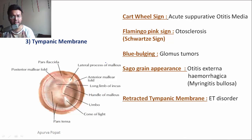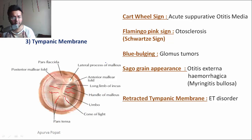Certain signs of the tympanic membrane: the first is the cartwheel sign, seen in acute suppurative otitis media, where a leash of blood vessels runs in a radial direction from the handle of malleus, giving a congested tympanic membrane appearance. The next is the flamingo pink sign, also called the Schwarz sign, seen in otosclerosis.